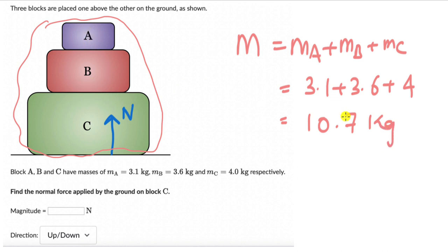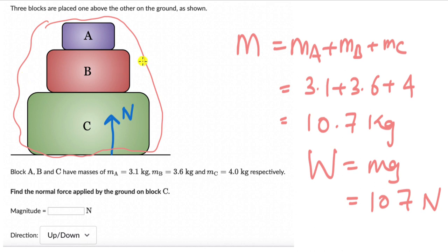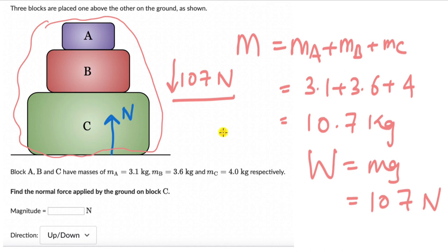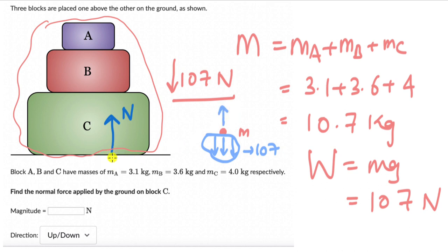So the mass of all these blocks is 10.7 kg, and the force due to this mass is W = mg. Taking g as 10, this comes out to 107 Newtons. When we consider these three blocks as one system, there is a total downward force of 107 Newtons. This system of three blocks is in equilibrium — it's not moving vertically or horizontally. So if there is a total downward force of 107 Newtons, there must be a total upward force of 107 Newtons — the normal force by the ground on block C, which is the only block touching the ground.